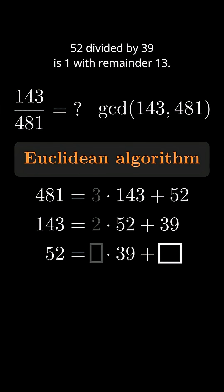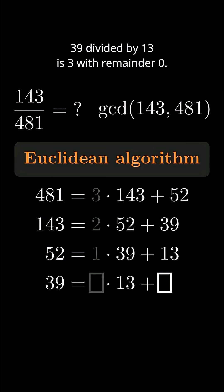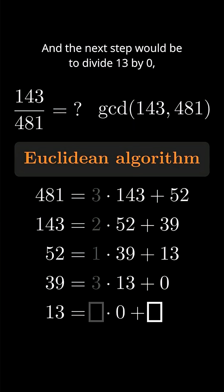52 divided by 39 is 1 with remainder 13. 39 divided by 13 is 3 with remainder 0. And the next step would be to divide 13 by 0, so we better stop there.